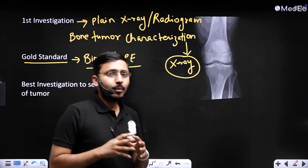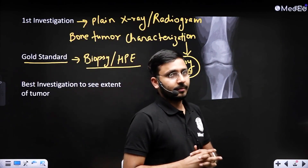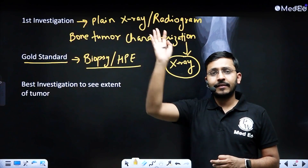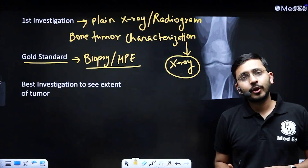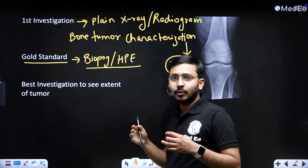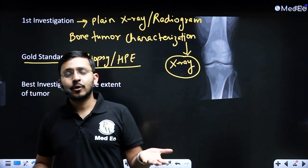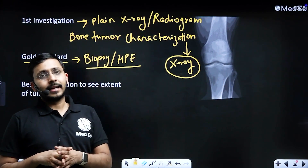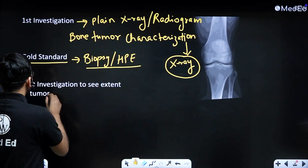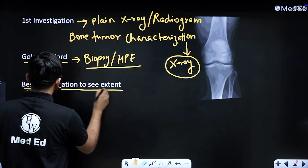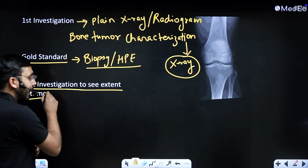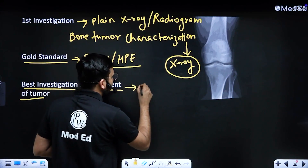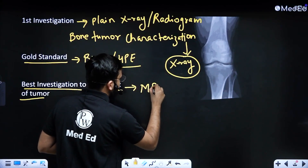If the question asks which investigation makes the diagnosis of a bone tumor, the answer is the plain x-ray. The diagnoses of GCT, aneurysmal bone cyst, and osteosarcoma are made on a plain x-ray at first hand. Now if the question asks about the investigation to see the extent of the tumor, the answer is MRI.